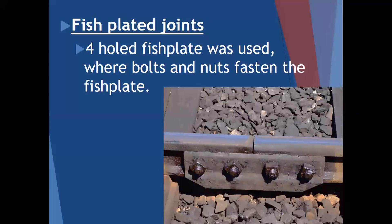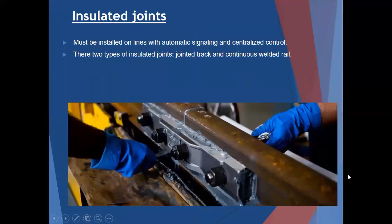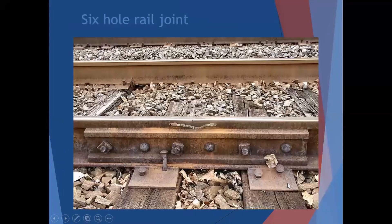Then you get fish plated joints - a four-hole fish plate using bolts to fasten the plate, with four bolts visible. You also get an insulated joint, which looks a lot like the fish plate but is also thermit welded or glued on. You get a four-bolt and a six-bolt version.